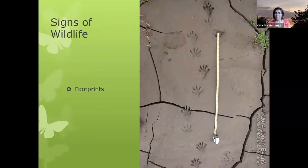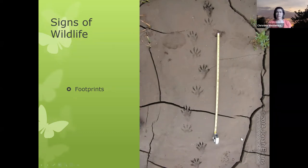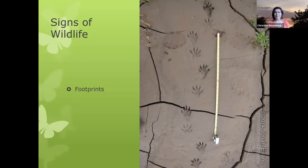One thing we can look for is footprints. I got a couple of photos from Jonah Evans, a Texas Parks and Wildlife Department biologist who is kind of an expert in tracking. Does anyone want to guess what kind of footprints these are?